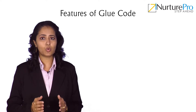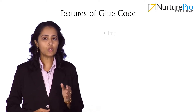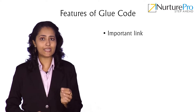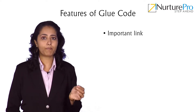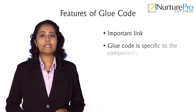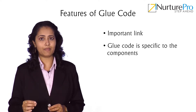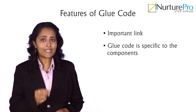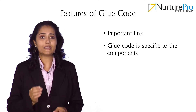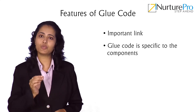Some of the glue code features are discussed here. Glue code is an important link between components and plays a vital role. It is custom written or tailor-made for each application or set of software components — that is, glue code is specific to the components.